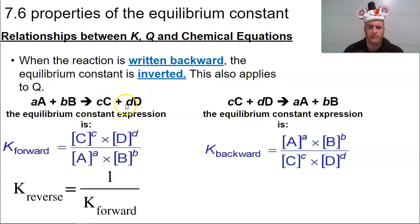So we see we got our products over reactants. Well, these are new products, that's why they go on top, and our new reactants go on the bottom. So the reverse reaction K is the inverse of the forward reaction numerically.